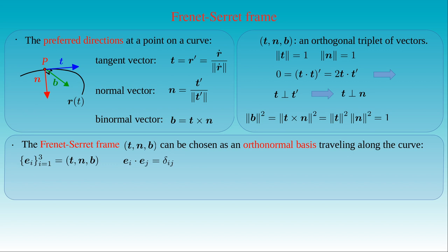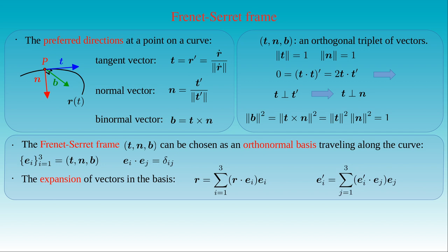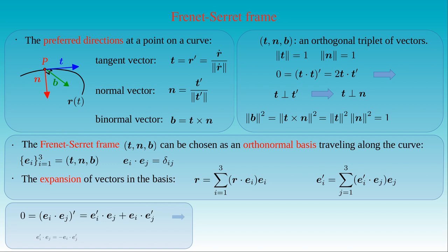If we expand the vector r in this orthonormal basis, we can write r as the linear combination of the basis vectors, where the expansion coefficients of e_i are given by their dot products with r. We can also expand the derivative of the basis vector e_i with respect to the arc length in the basis itself; the expansion coefficient equals the scalar product of e_i-prime and e_j. If we take the derivative of the orthogonality condition, the derivative of the Kronecker delta vanishes, as does the derivative of the dot product of e_i and e_j. Applying the Leibniz rule, e_i'·e_j plus e_i·e_j' equals zero, showing that e_i'·e_j equals minus e_i·e_j'.